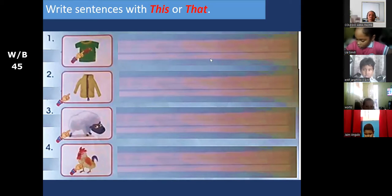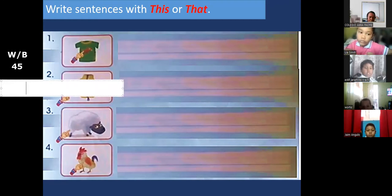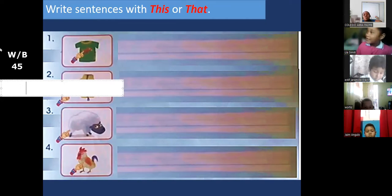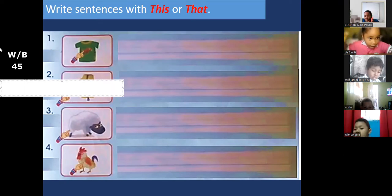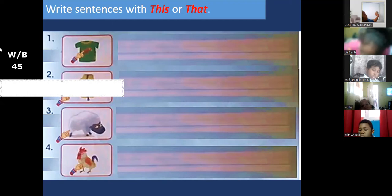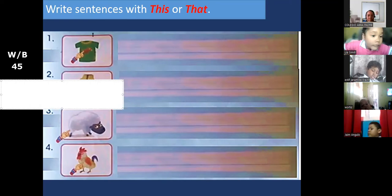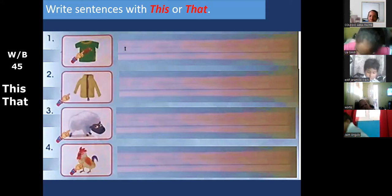Remember, we use this and we use that. We use this when something is near us, something is close to us. If something is near us we say this. Look at here, this is my eraser, this is my eraser because it's close to me. And that, because it's so far. That is my eraser because it's far from me. When it's close we say this, and when it's far we say that, okay Miguel?